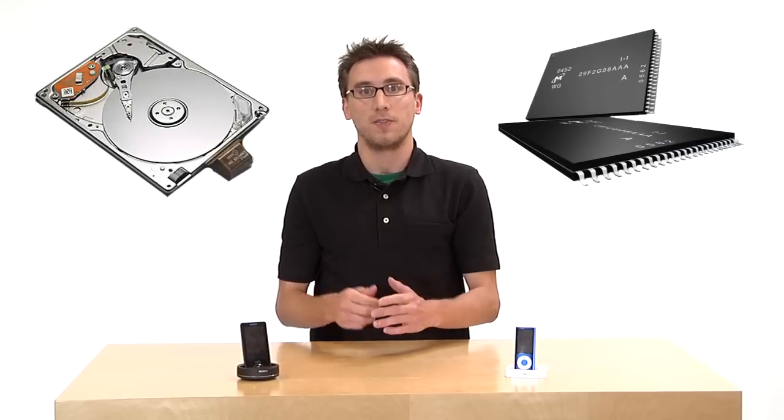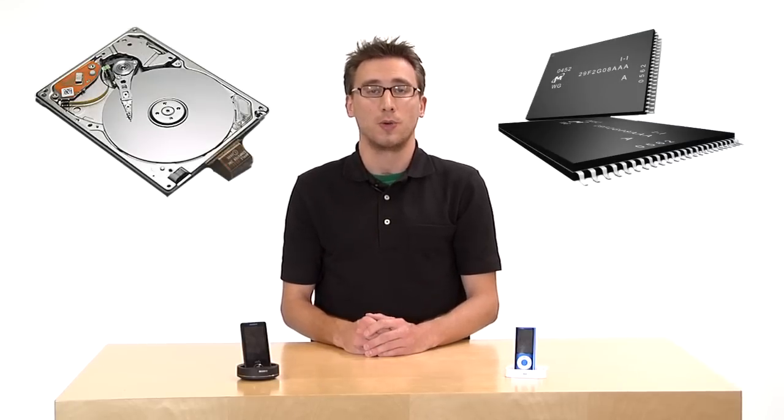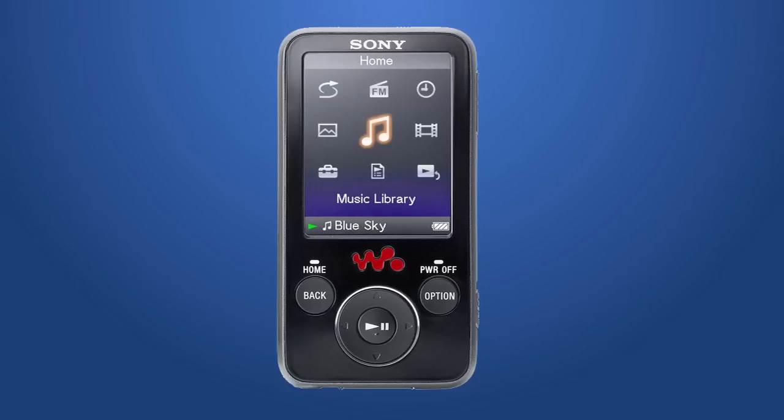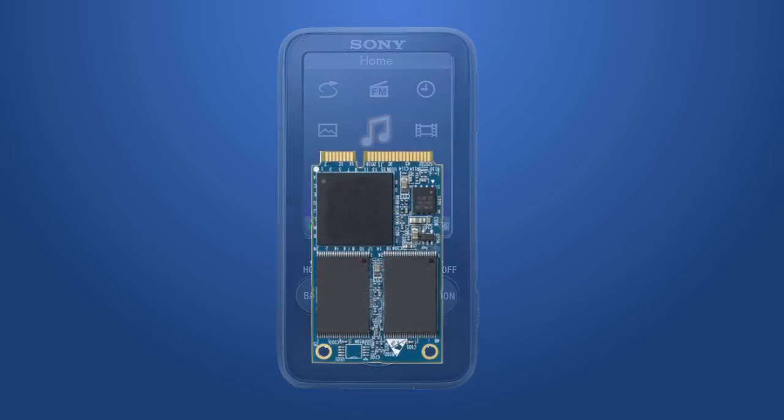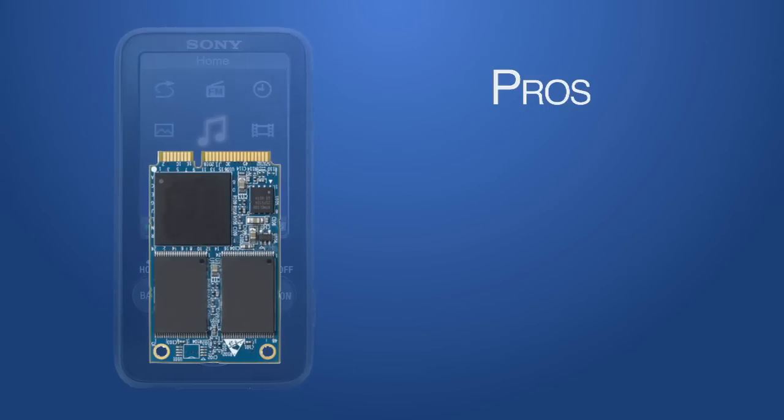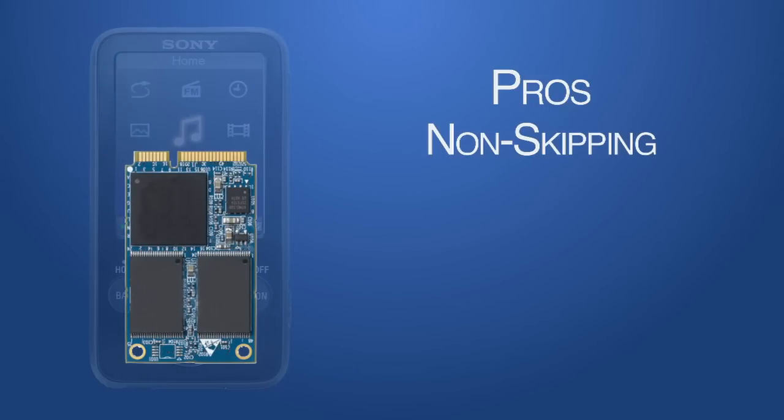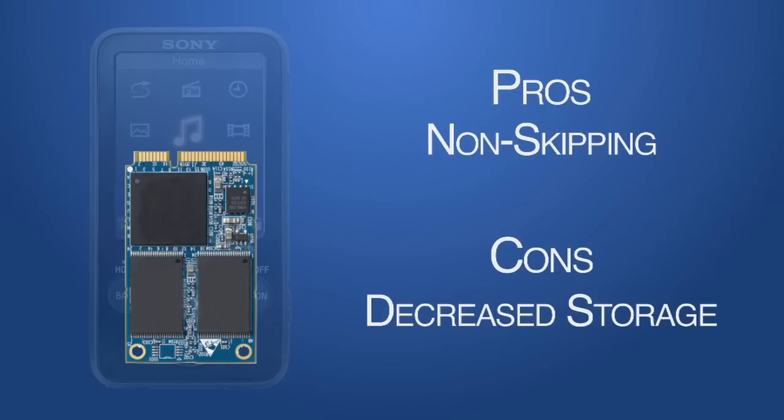MP3 players store information internally on a hard drive. There are two different types of drives used with MP3 players: a spinning hard drive or a static flash drive. There are pros and cons for both storage types. Flash drives allow for fewer moving parts, and information is read off a microchip, limiting any skipping that may occur on a hard drive. The downside to a flash drive is the decreased amount of storage compared to an internal hard drive.